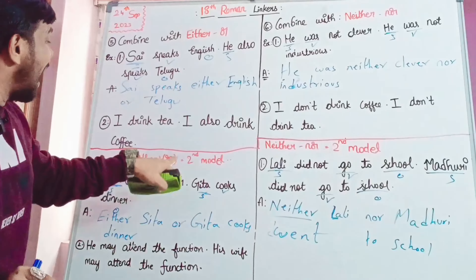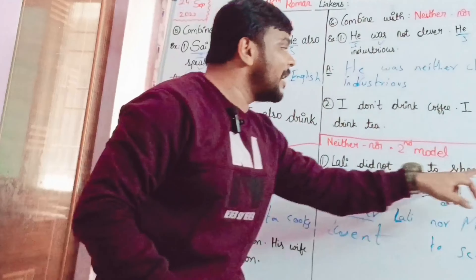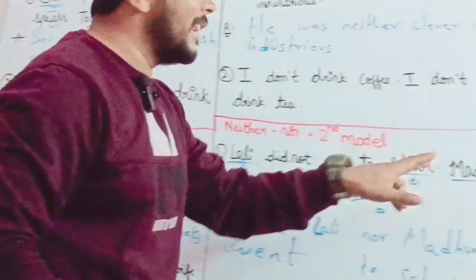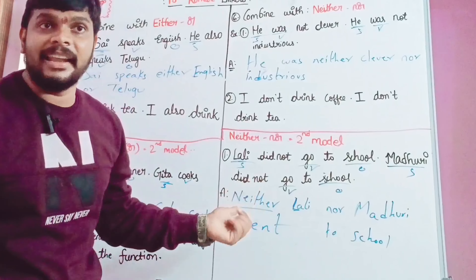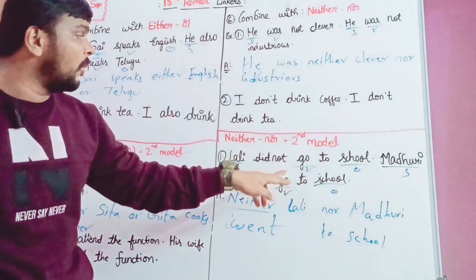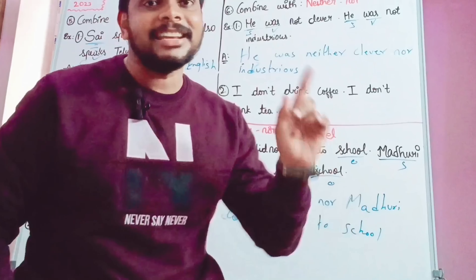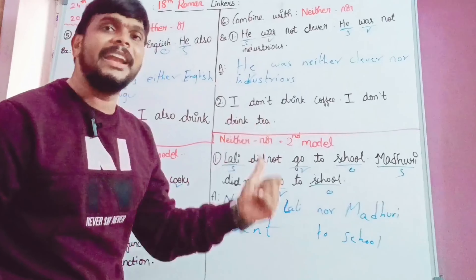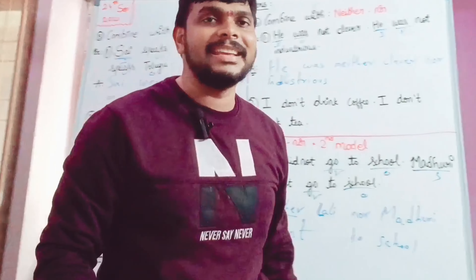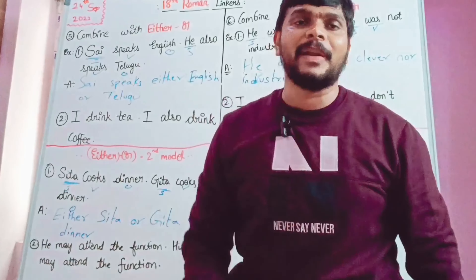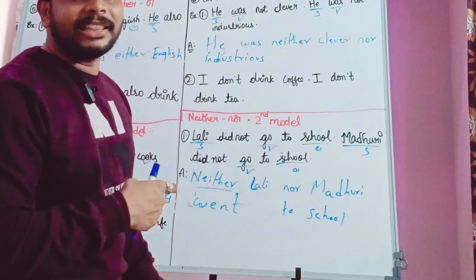Please check the second sentence. You can use both sides of each — either connection or neither nor connection. Those are called correlative conjunctions. You will be using these with the homework and following the correct answer. I hope you understand neither nor. I will explain it — it's very important.